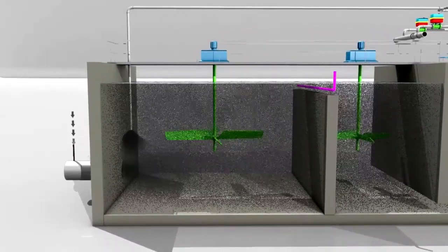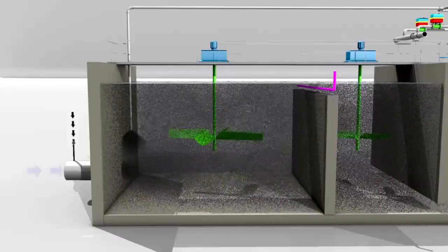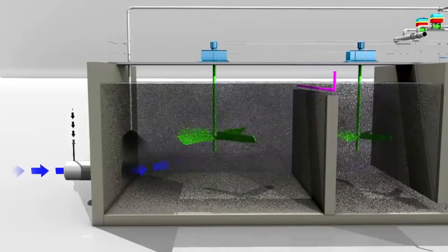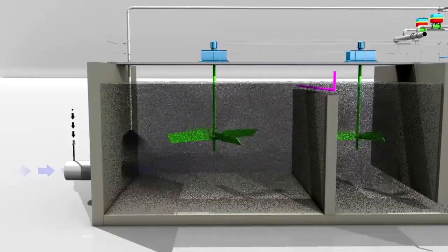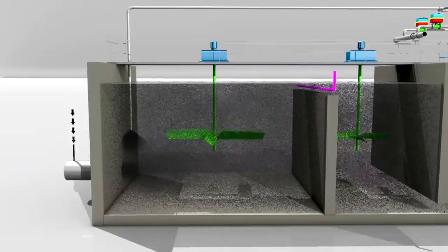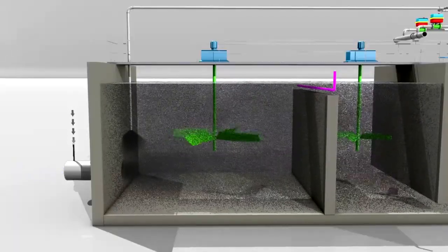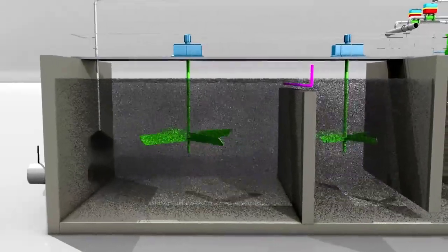After addition of powdered activated carbon, raw water enters the contact tank under vigorous mixing conditions to facilitate the adsorption reaction of the refractory compounds. Hydraulic retention time in this tank is typically 5 to 10 minutes.